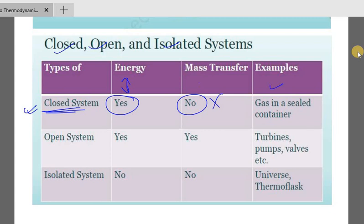For example, gas in a sealed container — a cylinder connected to gas. The gas cylinder is leak-proof, so the mass is not transferable. This is a closed system.